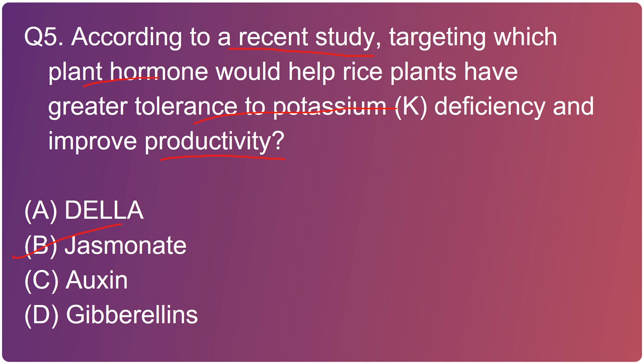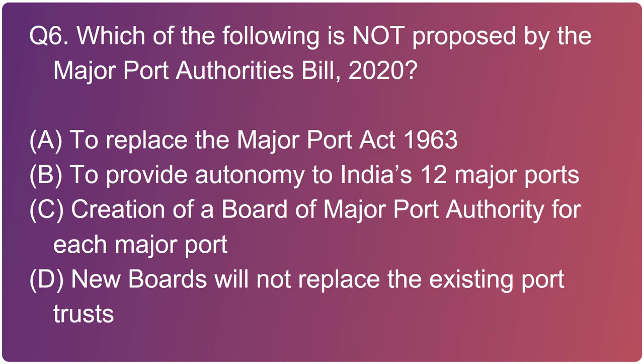Jasmonate is often associated with a plant's defense against biotic factors like pests, insects, and pathogens. The overexpression of a gene called OsJAZ9 helps make rice plants more tolerant of potassium deficiency. Potassium deficiency affects plants by inhibiting the growth of roots and shoots.